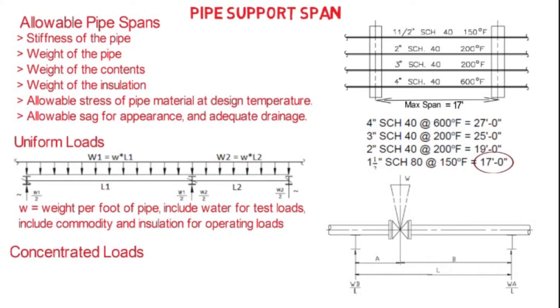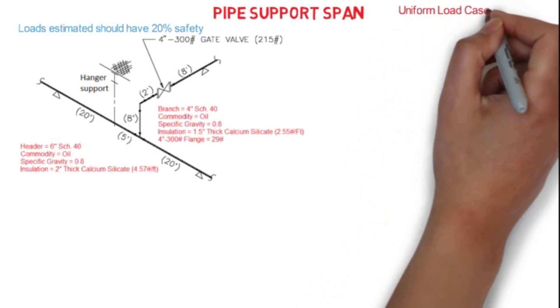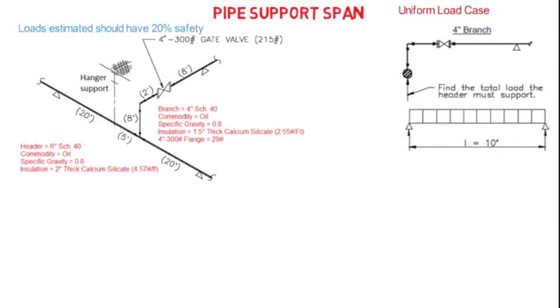For understanding purposes, we will take one example. Load estimation should have 20 percent safety margin. We will break the problem into simple sections, and at the end we will add the results. First, we will take a four-inch branch connection where we have per foot weight of four-inch pipe is 10.79 pounds per foot.